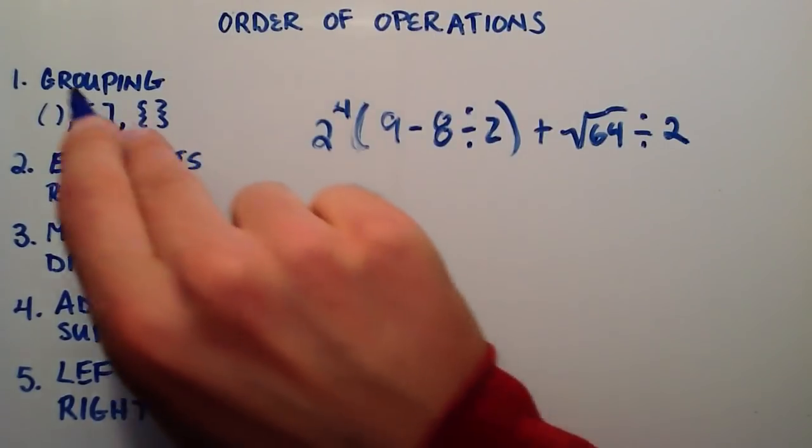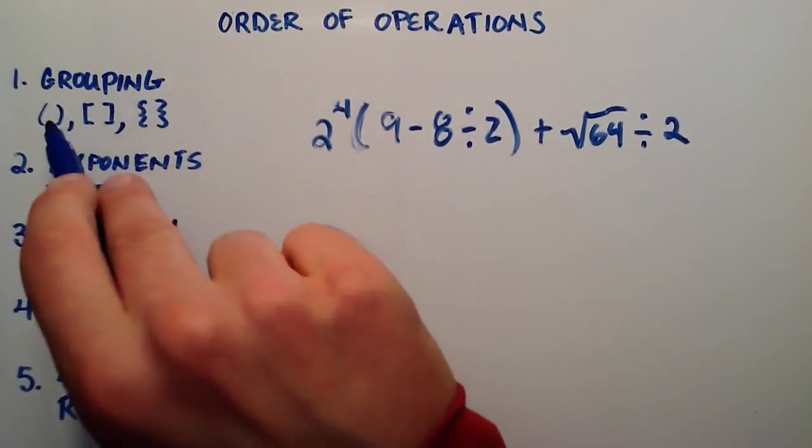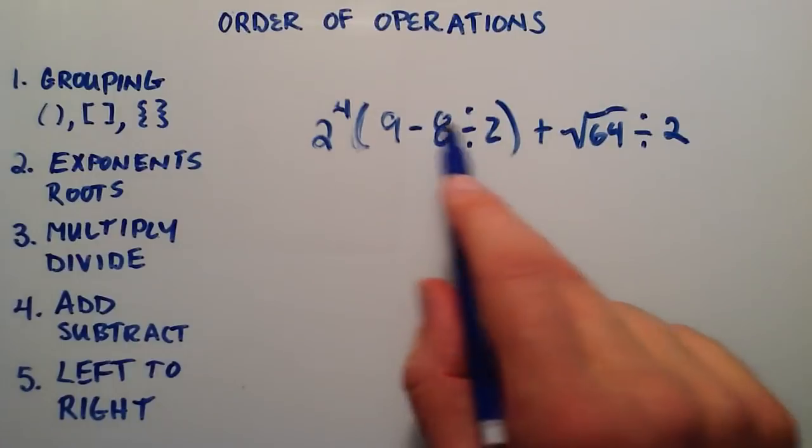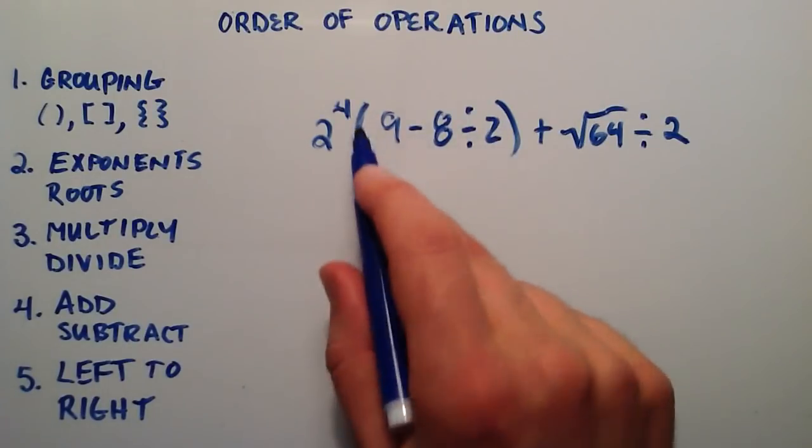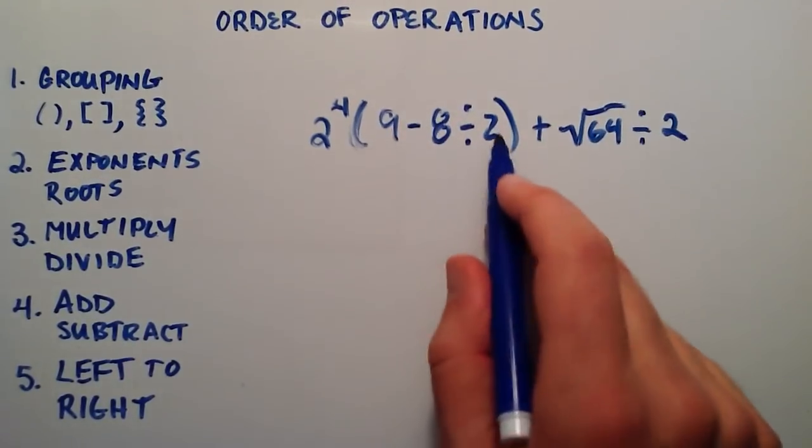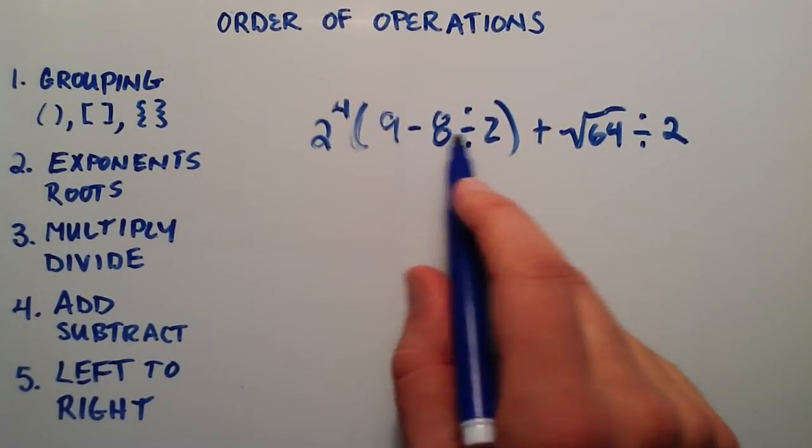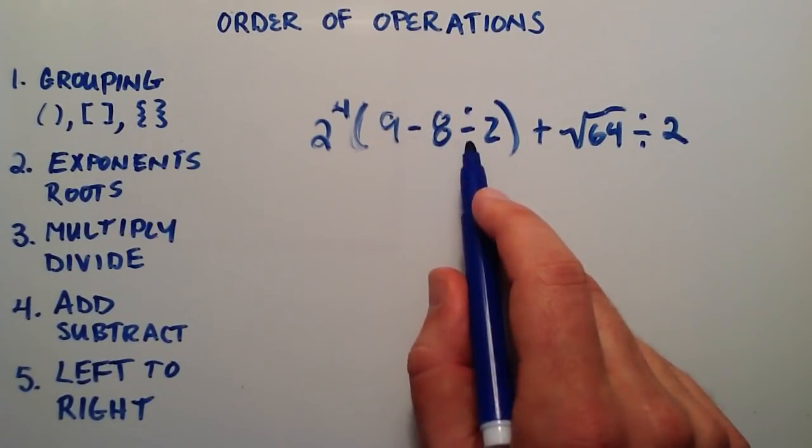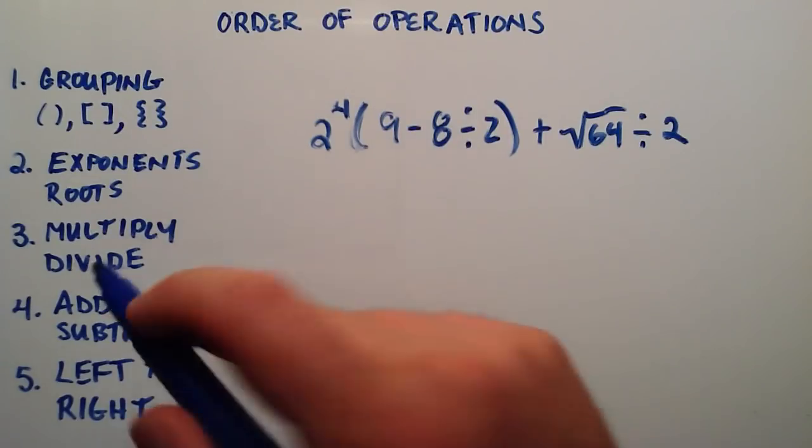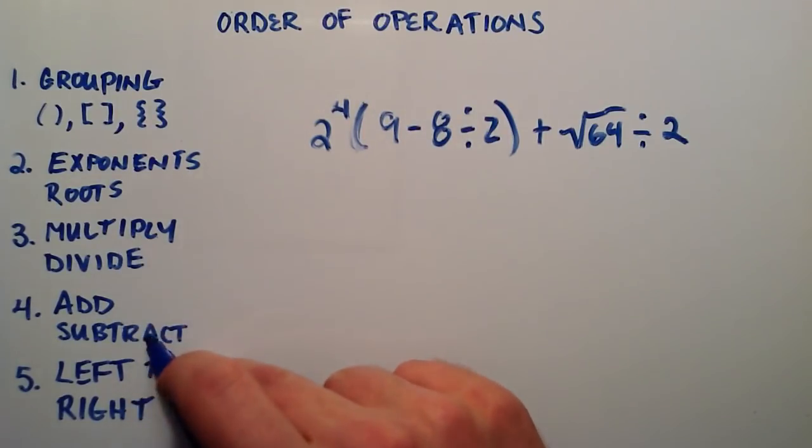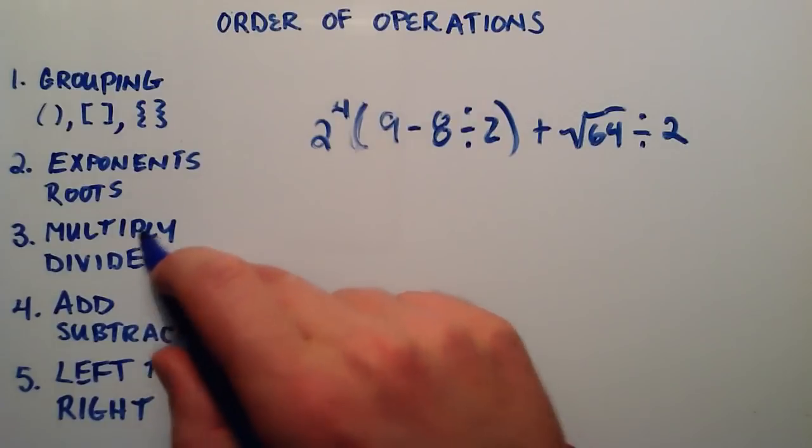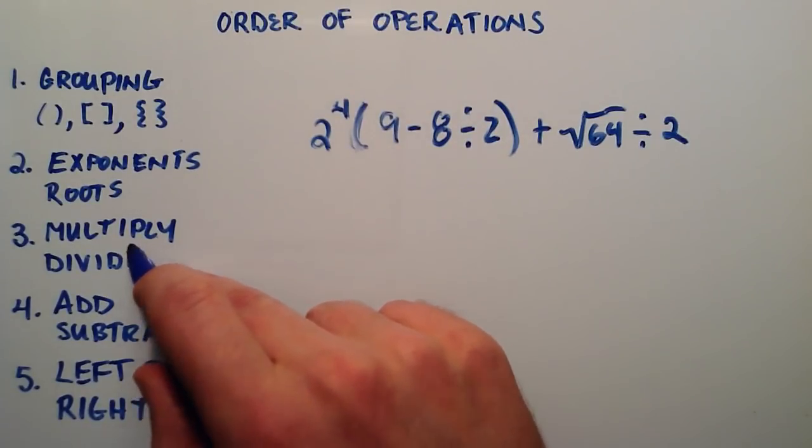So this time, we're looking at number 1 on our list here. We have a grouping mechanism. We have parentheses here. So we're going to do everything inside this grouping mechanism before we do anything else. So inside this grouping mechanism, we have a subtraction and we have a division. Well, division is number 3, and subtraction is number 4. So we do the lower number first. So the lower number is 3, so we divide.